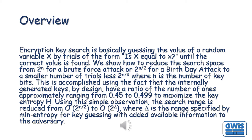This is accomplished using the fact that the internally generated keys, by design, have a ratio of the number of ones approximately ranging from 0.45 to 0.499, to maximize the key entropy H. Using this simple observation, the search range is reduced from 0 to 2^(N/2) down to 0 to 2^D, where D is the range specified by min entropy for key guessing with added available information to the adversary.